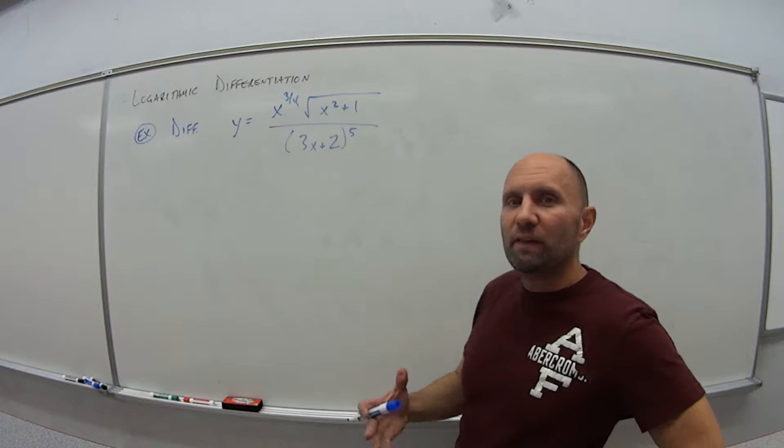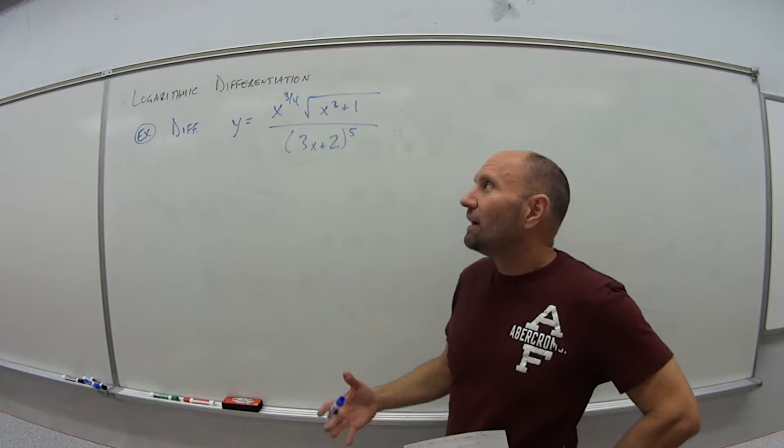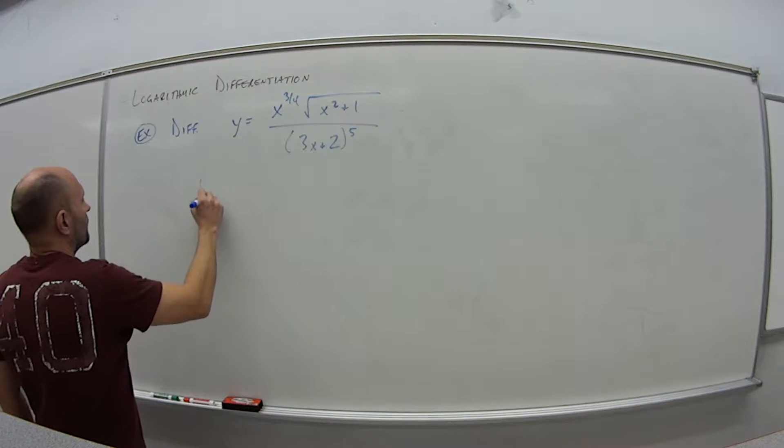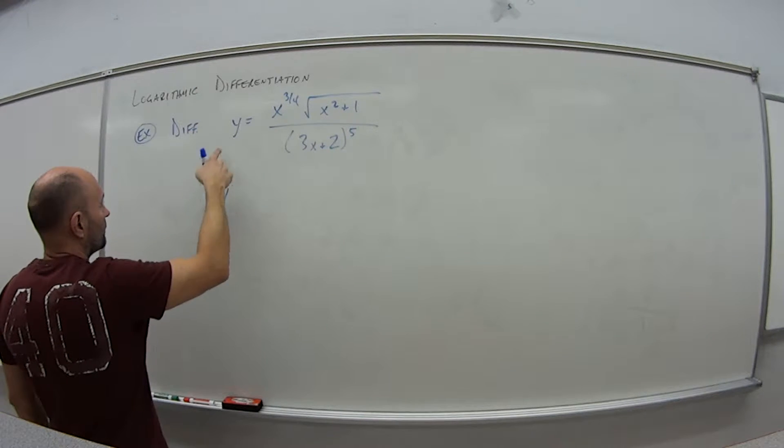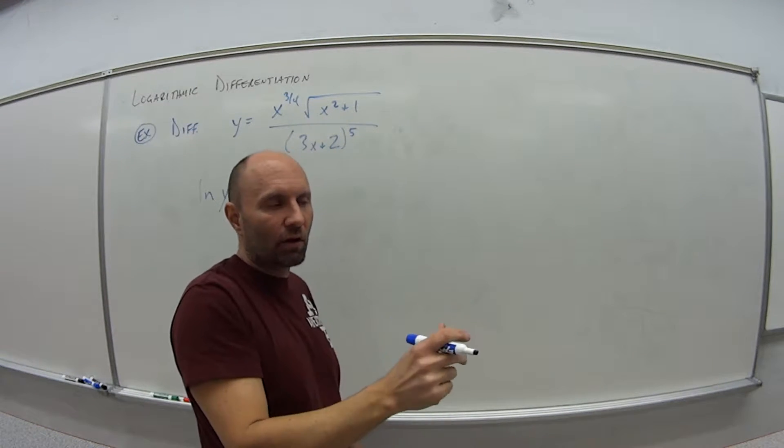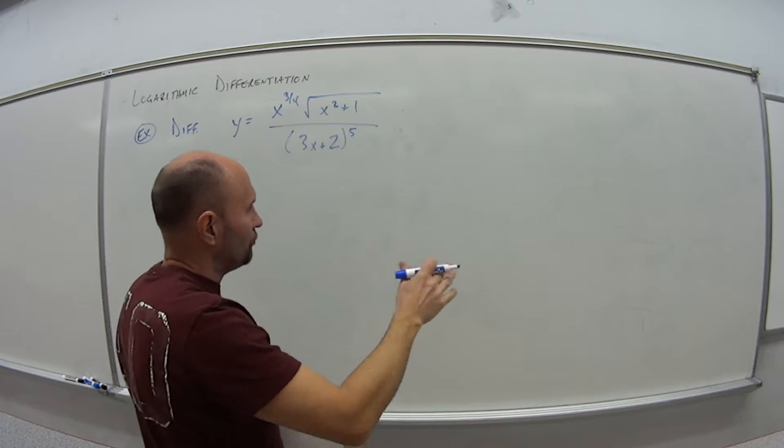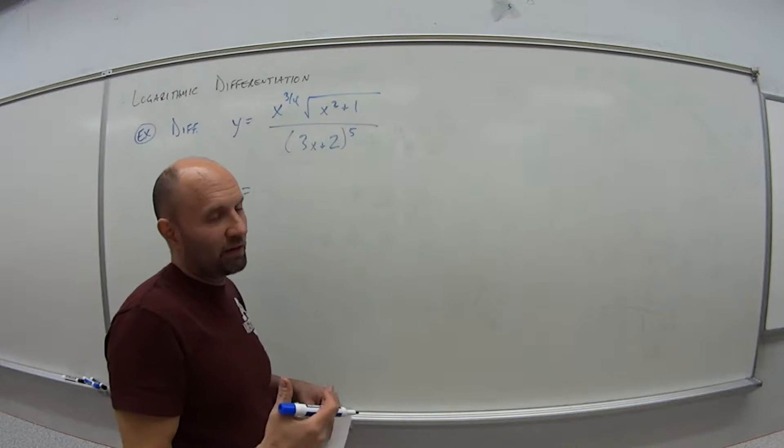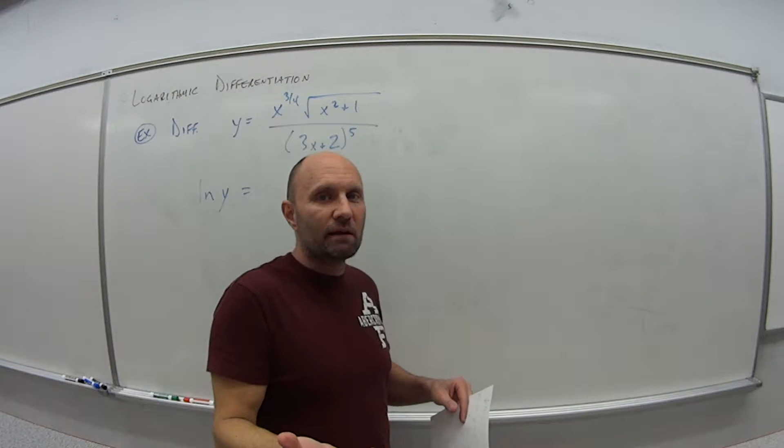But using the idea of logs, I can simplify this thing a little bit. If I take the natural log of both sides, so natural log of the left side, and remember you have to take the natural log of both sides. You can't just do one and say y is equal to the natural log of this thing.